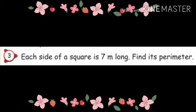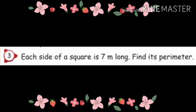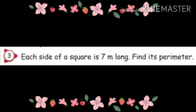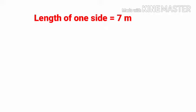Third sum: Each side of a square is 7 m long. Find its perimeter. That is, one side of the square is 7 m. So length of the square equals 7 m.